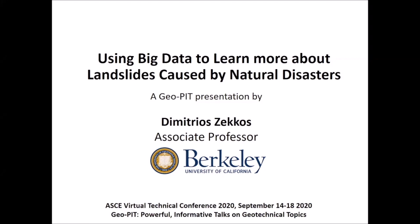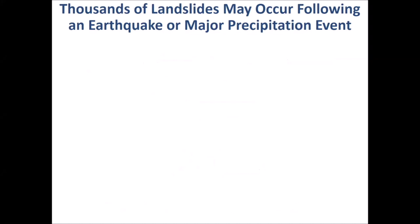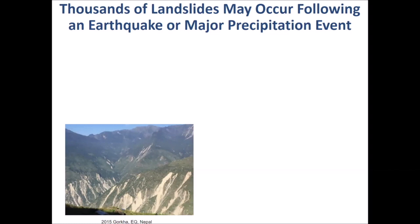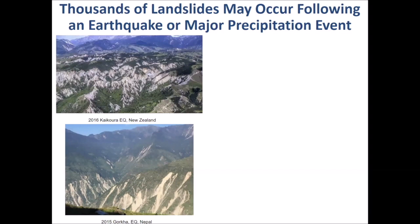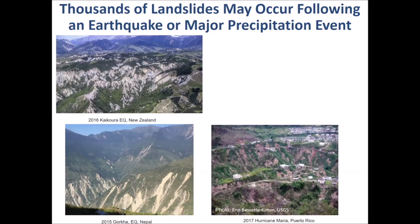Hundreds to thousands of landslides may occur during a natural disaster, such as an earthquake, a hurricane, a tropical storm, or a monsoon. For example, more than 20,000 landslides occurred during the Gorkha earthquake in Nepal in 2015, and more than 30,000 occurred during the Kaikoura earthquake in New Zealand a year later. In 2017, Hurricane Maria caused more than 40,000 landslides in Puerto Rico.